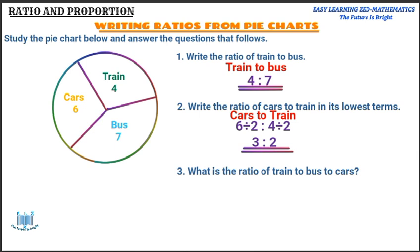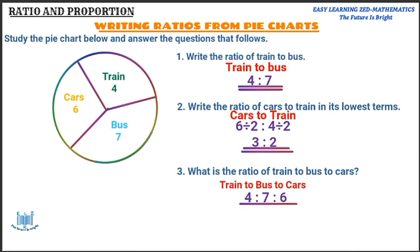Question number three: what is the ratio of train to bus to cars? We're going to write the statement: train to bus to cars. The number of train is four, the number of bus is seven, and the number of cars is six. So the ratio for train to bus to cars is four to seven to six. That is the correct answer.